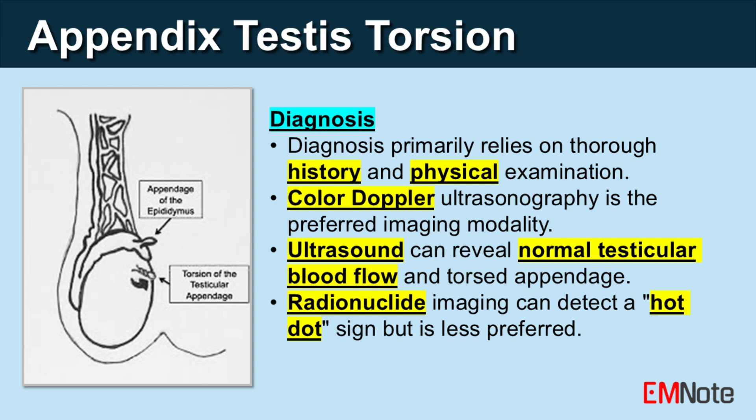Diagnosis. Diagnosis of appendix testis torsion is primarily clinical, relying on a thorough history and physical examination. Colored Doppler ultrasonography is the preferred imaging modality for evaluating acute scrotal pain and can help confirm the diagnosis.